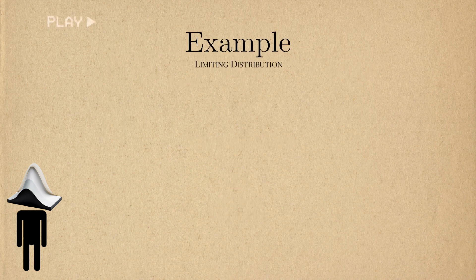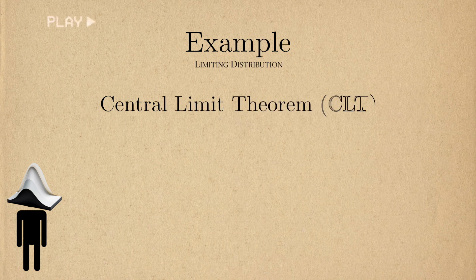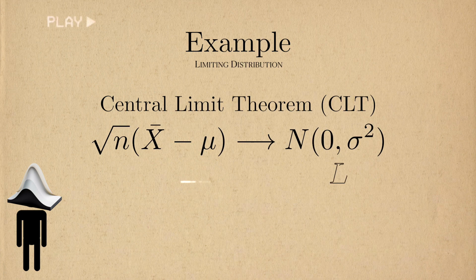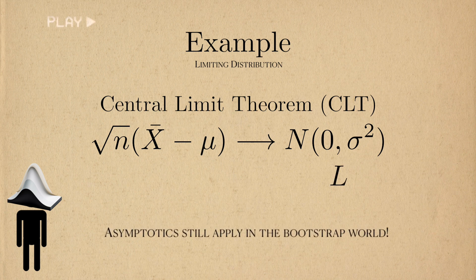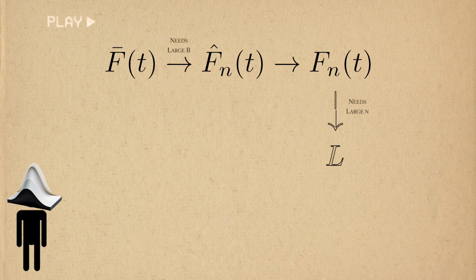For example, in the case of the sample mean, we know that the central limit theorem will tell us that L will be a normal distribution with some population variance. Using a similar argument, the same thing will happen to the bootstrap distribution. It too will have a limiting distribution, which we'll call L hat.